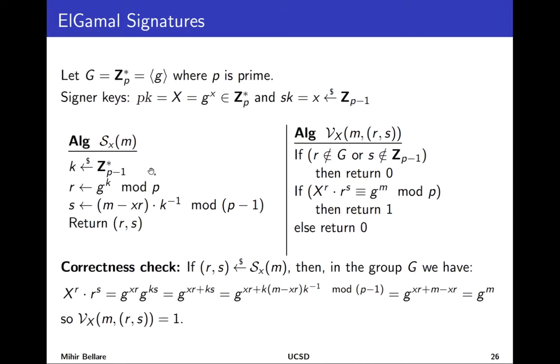So k will be something that does and then you can do this step. Okay, but that's just a scheme description. What can we say about its properties? The first thing to check is correctness. We want to check that if you generate signatures like this they do pass verification. So that is just algebra.